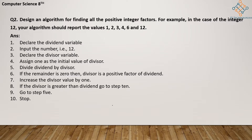Next, increase the divisor value by 1. So we do an increment in the divisor — its first value was 1, and now the value becomes 2. If the divisor is greater than the dividend, go to step 10. So if the divisor value is greater than the dividend, go to step 10.